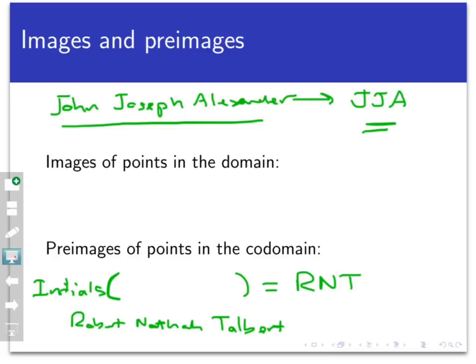And I'm sure there are a million people out there at least with the same three-letter combination. So this is another example of where you could have many different inputs getting sent to the same output. But if I just use my name alone, I'm not going to get sent to two or three different sets of initials. So that's preimages of a single point in the codomain.